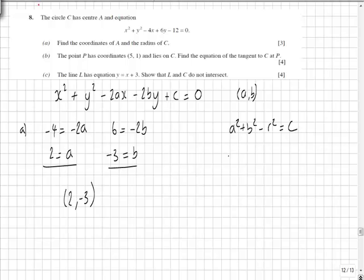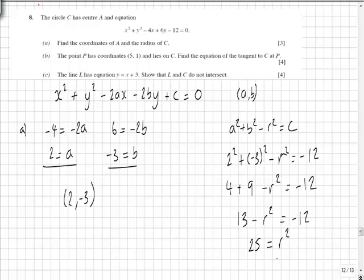Substituting into our second formula, we can see that 2 squared plus minus 3 squared minus r squared equals minus 12. So 4 plus 9 minus r squared equals minus 12. Rearranging, we get 25 equals r squared, meaning r must equal 5.